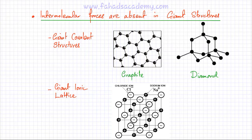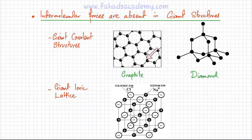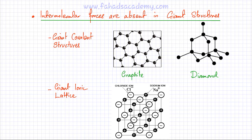One very important point: intermolecular forces are only present between molecules — they are absent in giant structures. In a giant covalent structure, all atoms are bonded to each other. For example, in graphite and diamond, all carbon atoms are bonded to each other, so there are no separate entities between which intermolecular forces could exist.